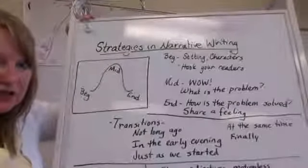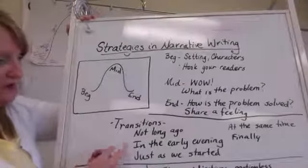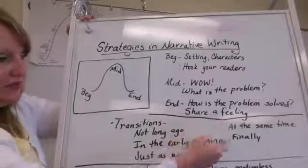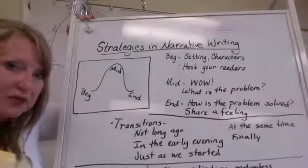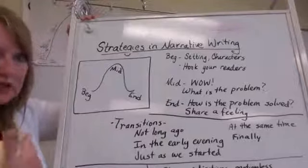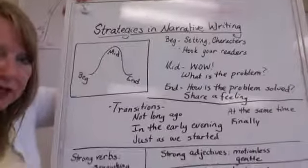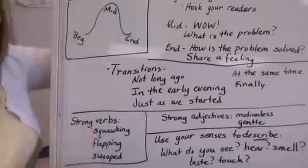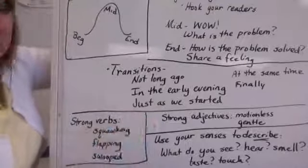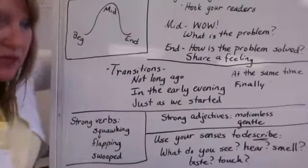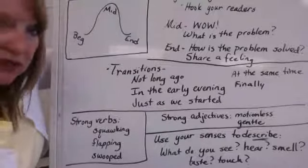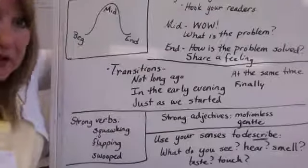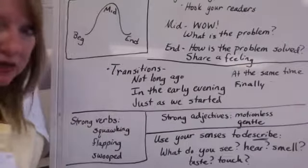Another strategy I used was transitions. I said things like: not long ago, in the early evening, just as we started, at the same time, finally. Those words give readers a sense of organization of how the story is taking place. I also tried to use strong verbs — squawking, flapping, swooped — and strong adjectives like motionless and gentle. One time I marked out the word 'big' because I thought surely there's a better word. So I said the towering trees instead of the big trees.